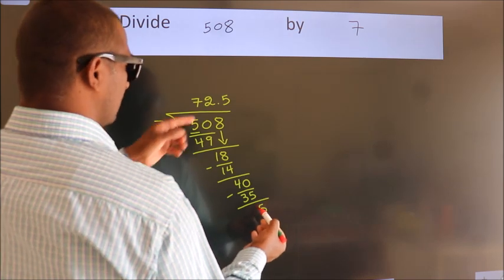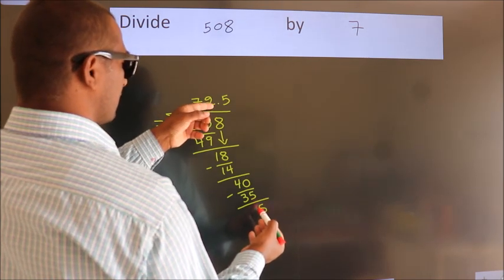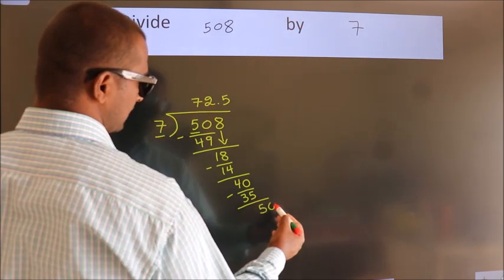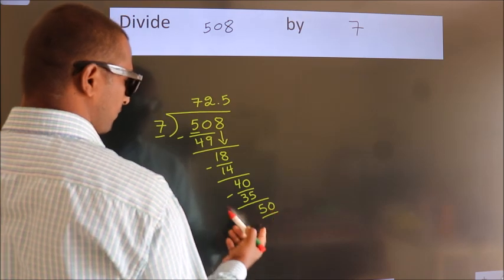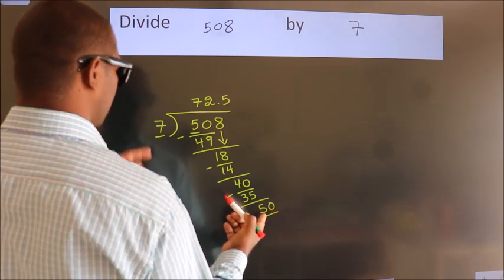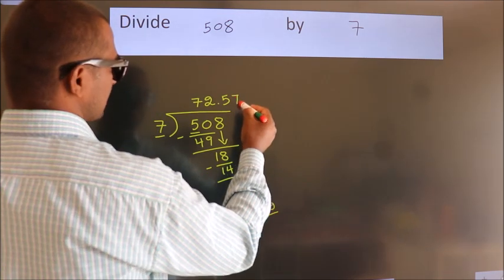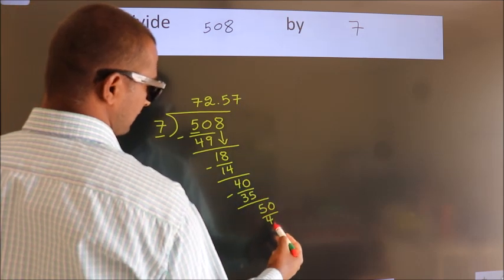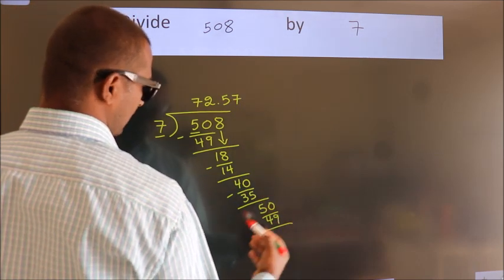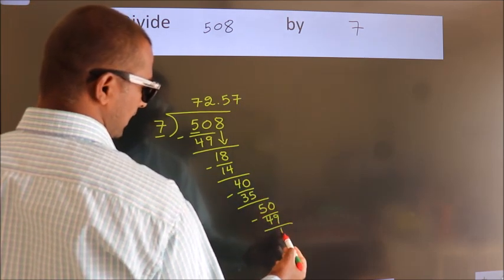After this, we already have the decimal, so directly take 0. So, 50. A number close to 50 in the 7 table is 7 times 7 equals 49. Now we subtract. We get 1.